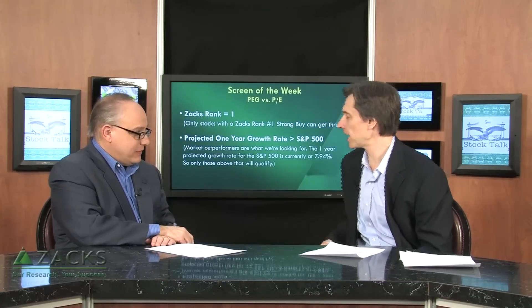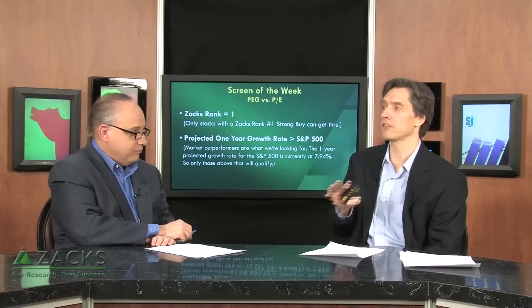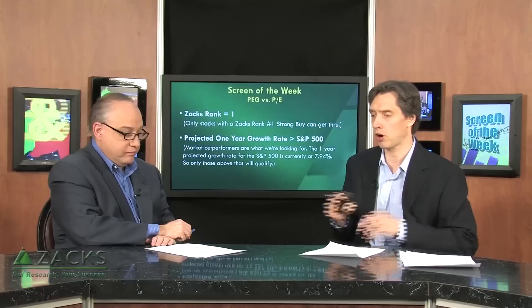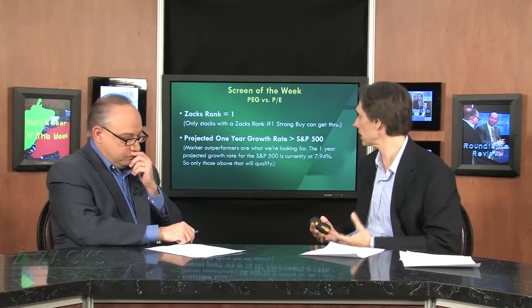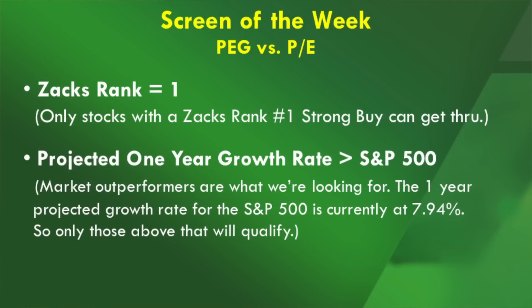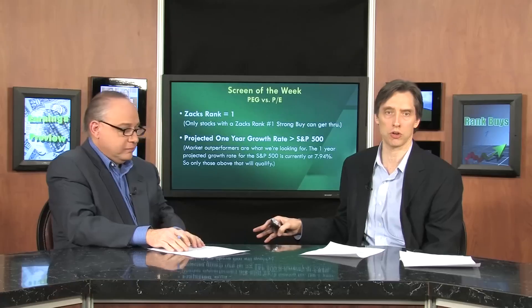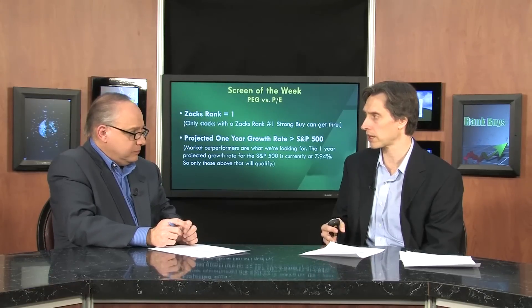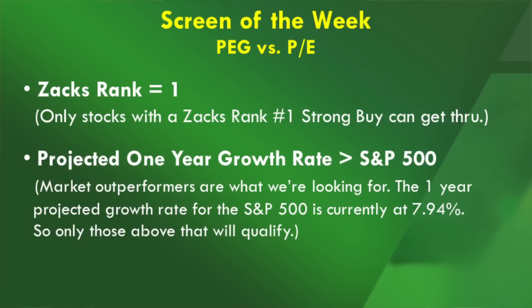This screen uses both of those metrics in some interesting and classic ways. The screen starts with a Zacks Rank of number one, so you're already shooting fish in a barrel — only strong buys get through. Then I want the projected one-year growth rate to be greater than the S&P's, because sometimes companies have low P/E ratios simply because they have poor growth rates. This ensures you're looking at companies with outsized growth rates versus the market. The average growth rate using the F1 estimate for the S&P is currently at 7.94%, so any company above that qualifies.